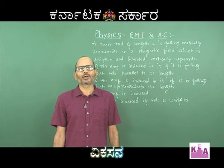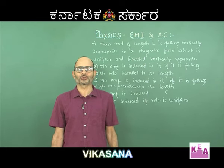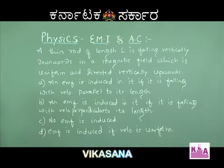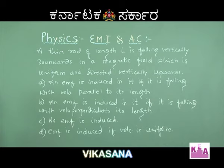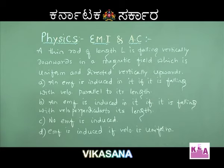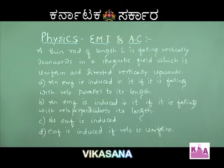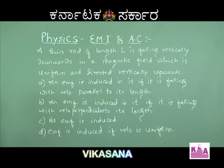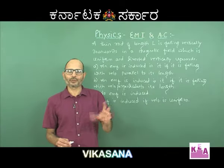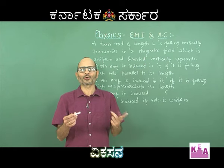Here is a simple problem — a basic problem on electromagnetic induction. Let me read the problem for you first. An EMF is induced if velocity is uniform. In the first two options, the problem talks about how a wire or rod of length L is falling.